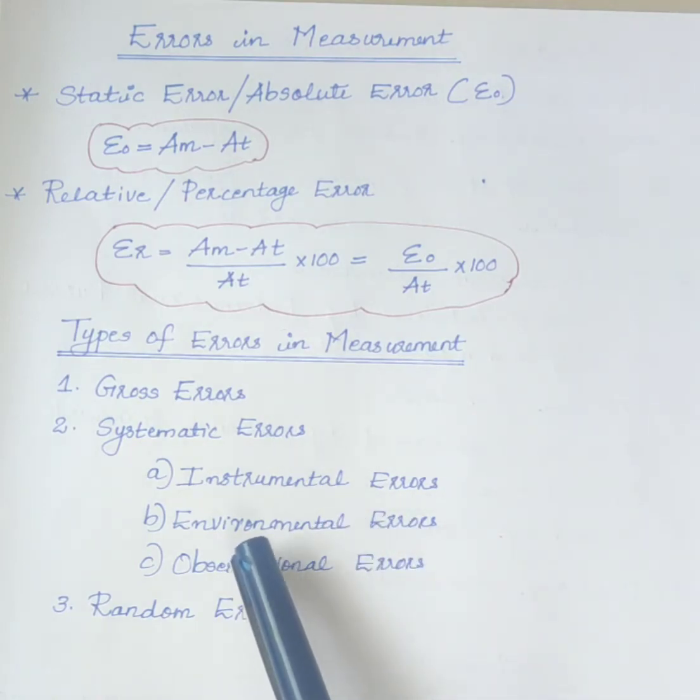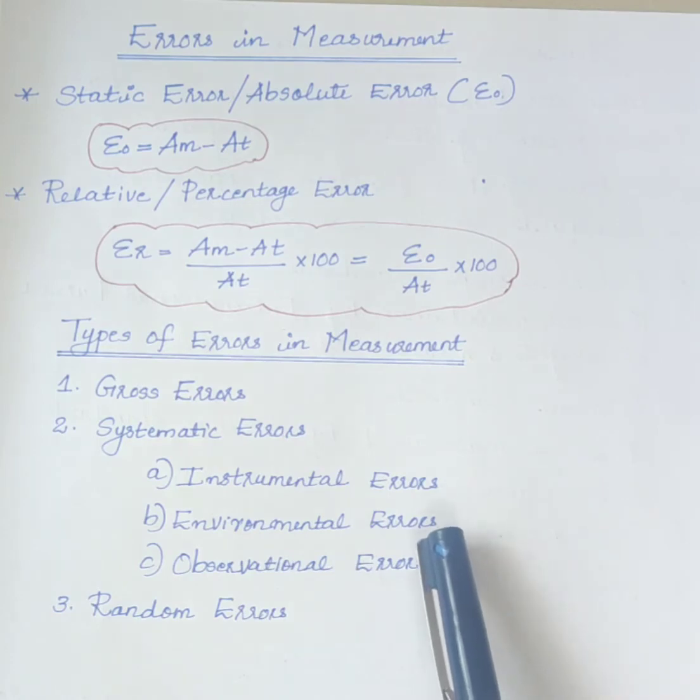Second one is environmental errors. These are mainly due to external conditions affecting the instrument. Parameters such as temperature, pressure, humidity, dust, magnetic and electric fields, etc. can affect the performance of the instrument.